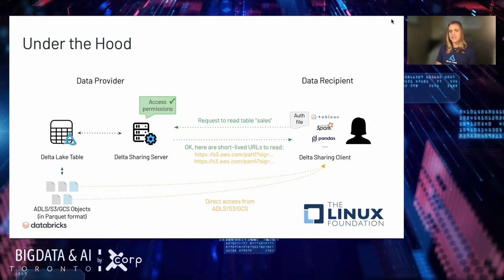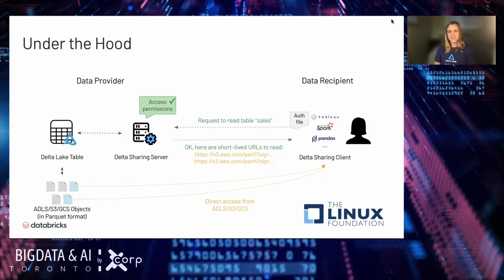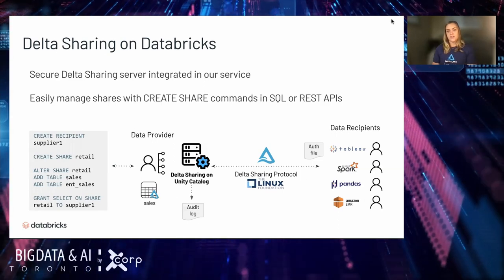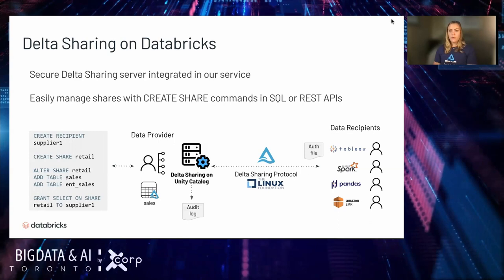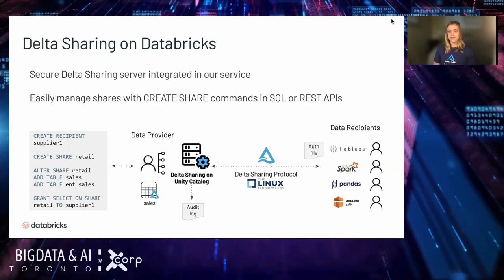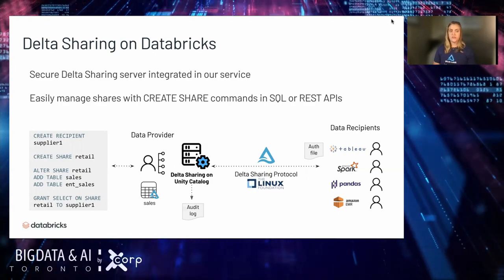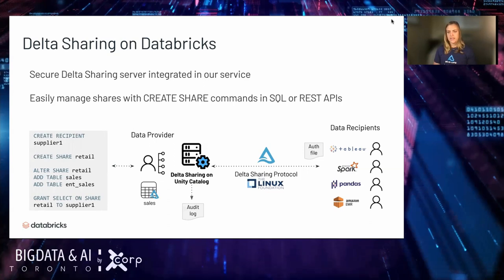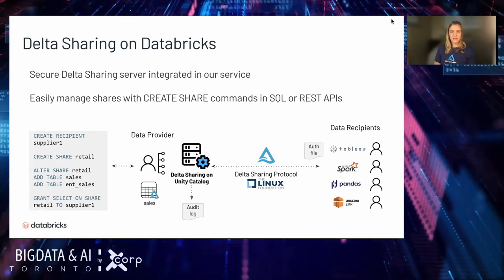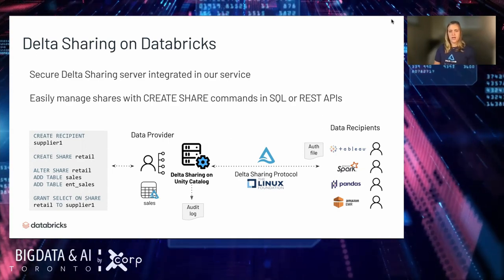Another big benefit is that you don't need to maintain a beefy server like an SFTP server to handle the data transfer between provider and recipient. If you are a Databricks customer, you'll get the secure Delta Sharing server integrated right into our service. That gives you the ability to create shares and manage recipients and, most importantly, get fine-grained audit logs about who is sharing the data, who is consuming it, and additional metadata about data access — which can be really useful for compliance, billing, and chargebacks.